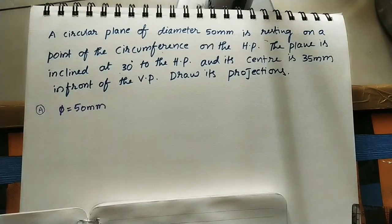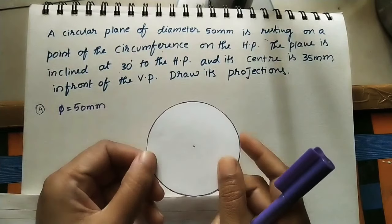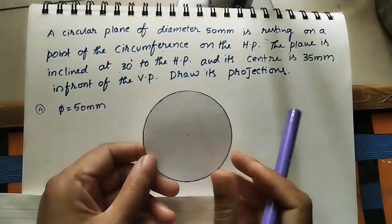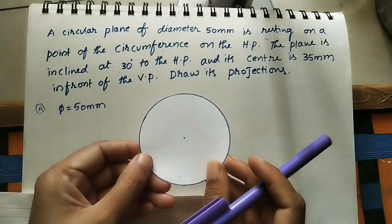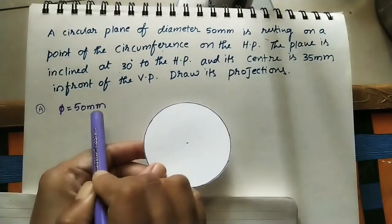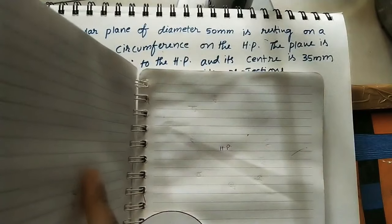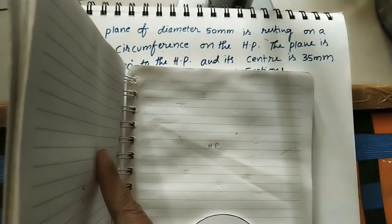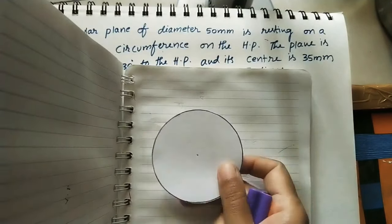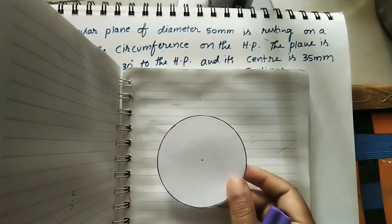Hi friends, welcome to my channel. In today's class let us discuss how to draw the projections of planes for a given circular plane. This is a circular plane — it has width and height but no thickness. The diameter of the circular plane is 50mm. I am taking a horizontal plane and a vertical plane, the angle between them is 90 degrees, and the line joining them is the reference line. This circular plane is parallel to the horizontal plane and perpendicular to the vertical plane.